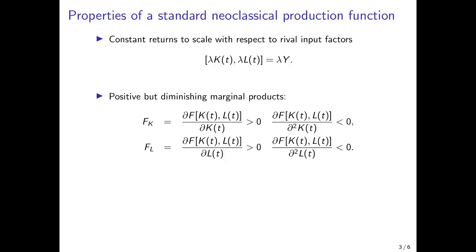The second property is that there are positive but diminishing marginal products of both rival production factors, capital and labor. This means that if I hold one production factor constant and increase the other, I can increase production — that's the positive marginal product. But the additional output I get from increasing one factor while holding the other constant decreases.